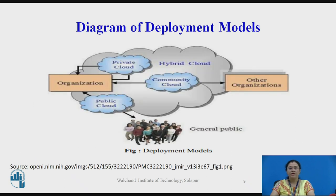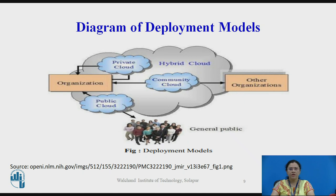In this diagram, we will see how exactly the four different cloud models are managed. Public cloud has an interaction of a particular organization with the general public. Private cloud is owned by a single organization and enables an organization to use cloud deployment technologies, meaning centralizing access to IT resources by different parts, locations or departments of that organization.